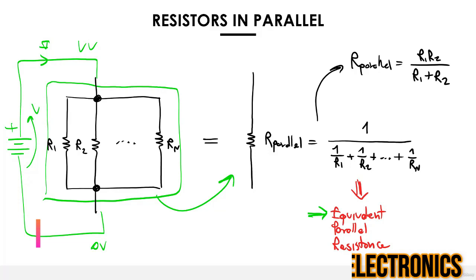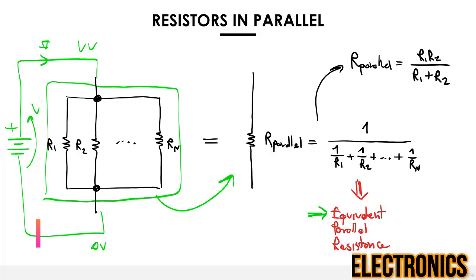The voltage source doesn't know what it is connected to. It only applies a voltage and as a result a certain current is requested. Whether the component is made of n resistors or just one resistor, there's no difference as long as the required current is the same. That is what 'equivalent' means — it's equivalent from the point of view of the rest of the circuit.